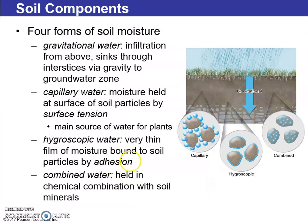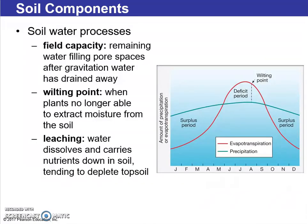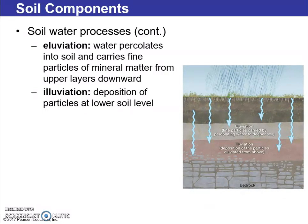A very thin film of moisture can be bound to soil through adhesion, or as combined water held in chemical combination with soil minerals. In terms of soil water processes, field capacity refers to the water remaining and filling pore spaces after gravitational water drains away. At the wilting point, plants are no longer able to extract moisture. Leaching occurs when water dissolves and carries nutrients downward, making soil less valuable for plant life. Illuviation is when water percolates into the soil carrying fine particles of mineral matter downward, depositing them at a lower soil level.